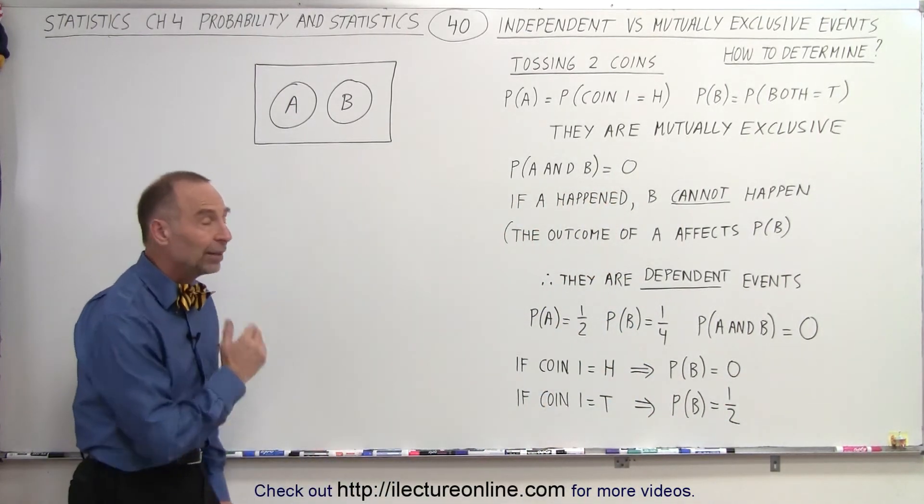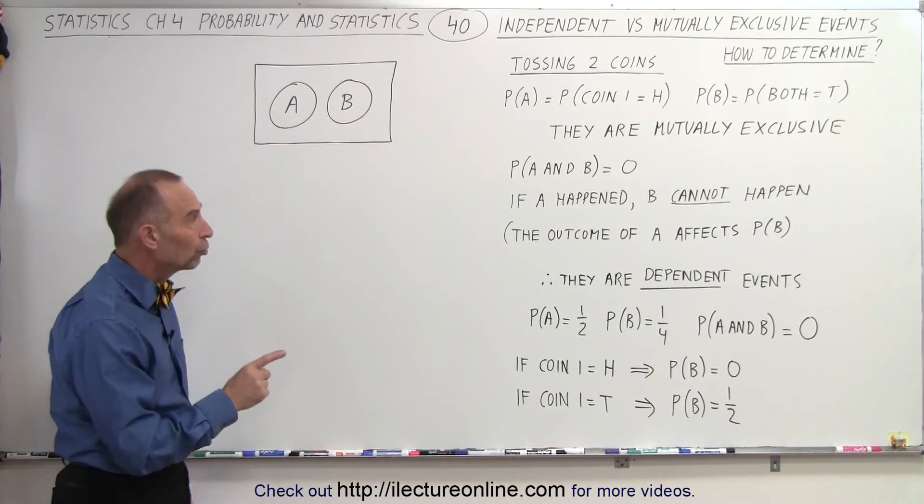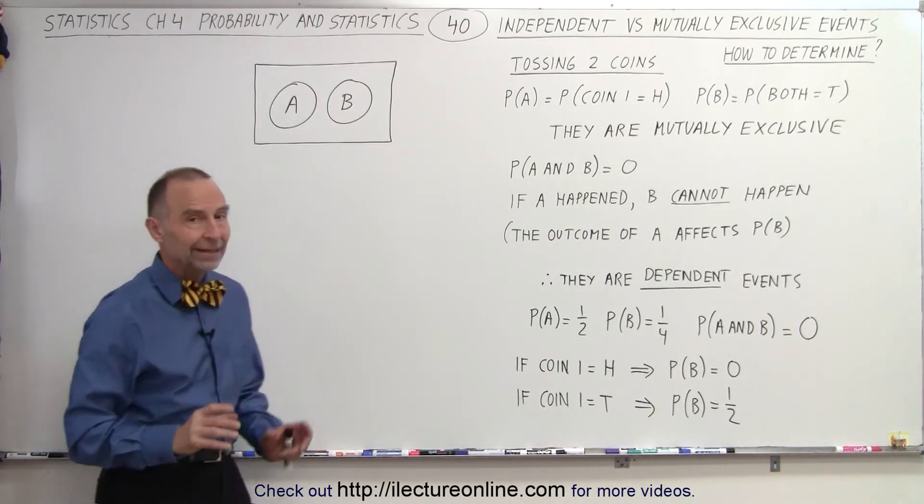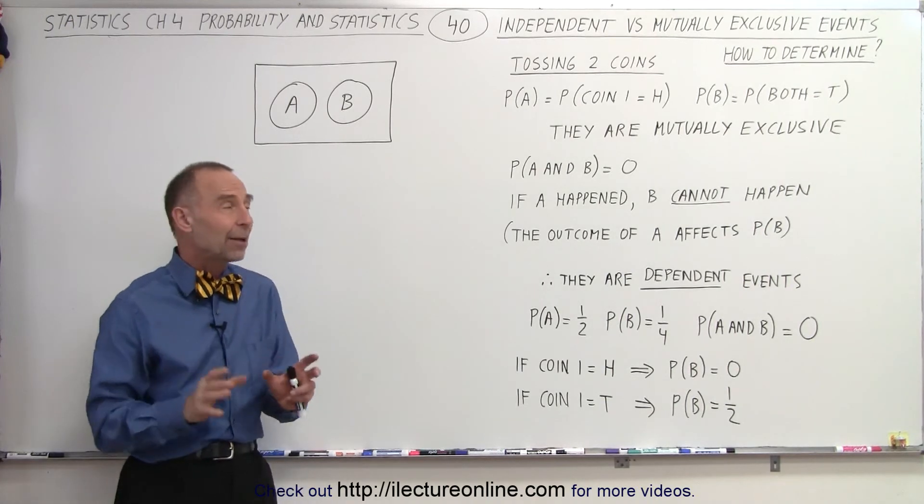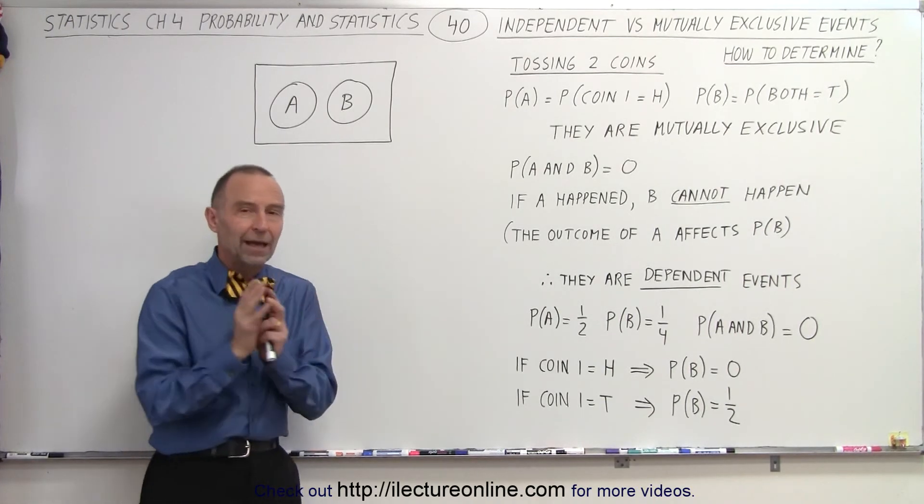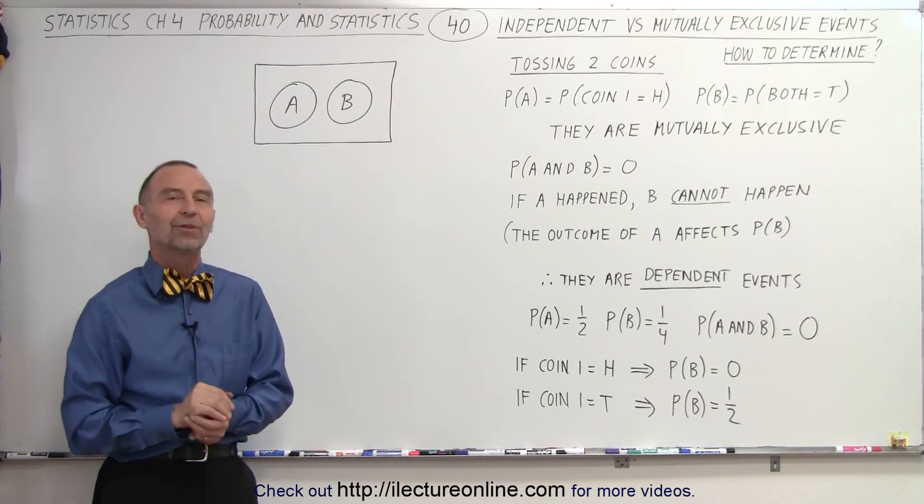And therefore, again, that's why these two events are dependent events, and they're also mutually exclusive. They cannot happen at the same time. You cannot have heads on one coin, and both coins being tails. And that is how it's done.